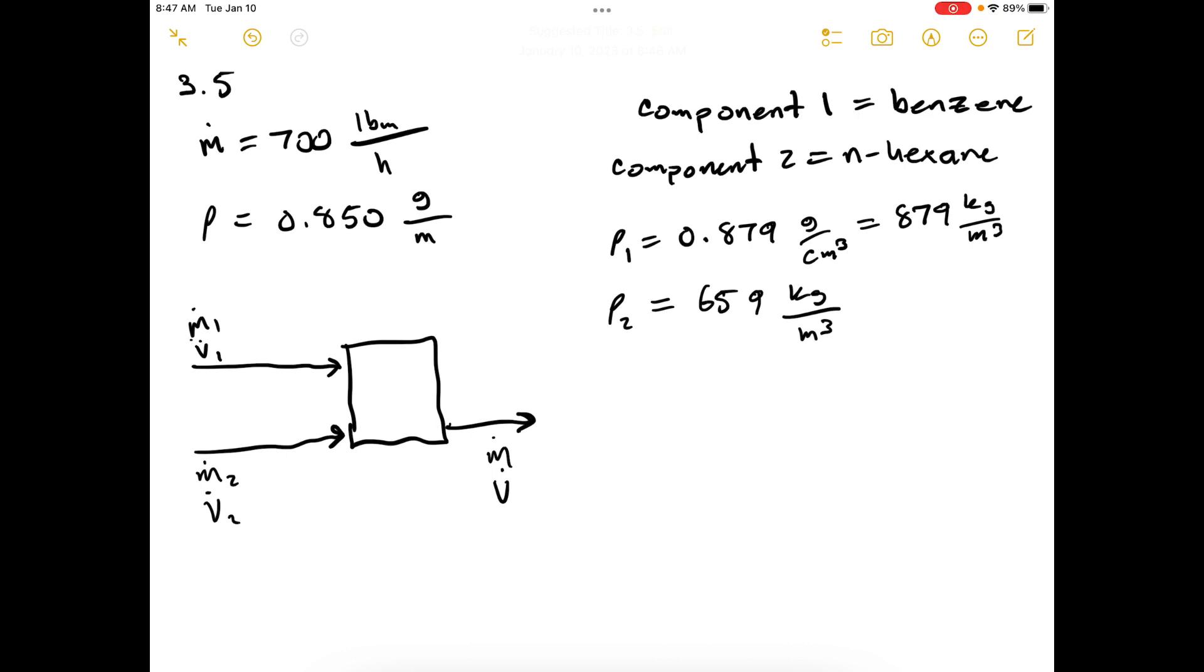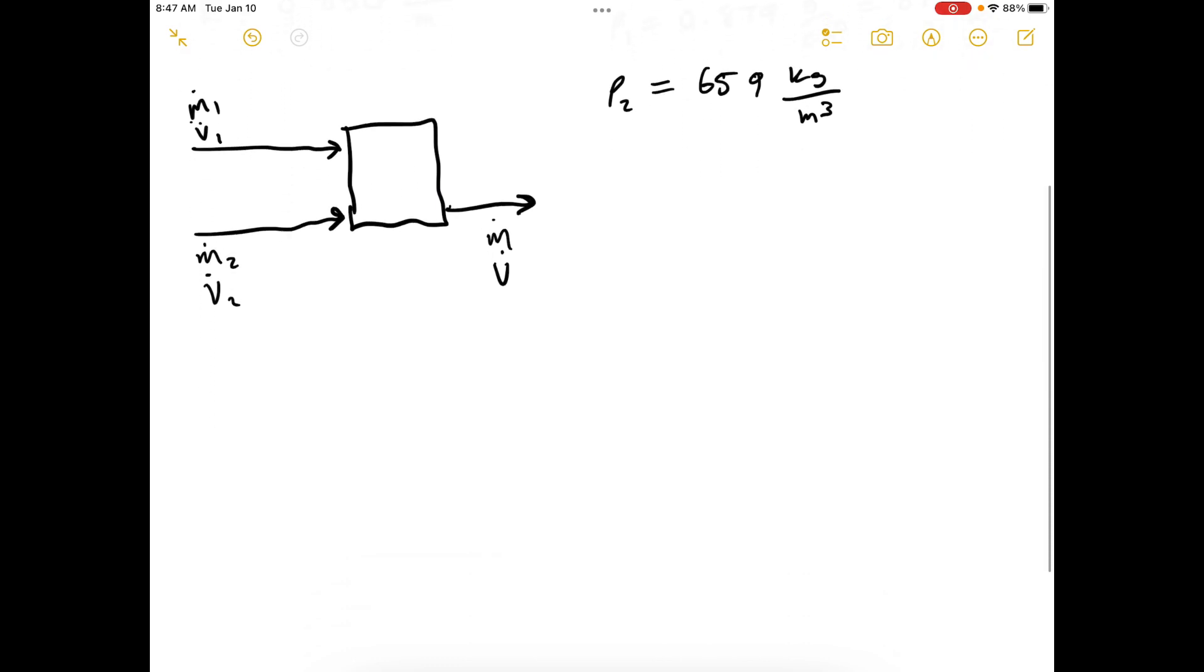Let's assume that because benzene and hexane are very similar in chemical structure, when we mix them together the volume is conserved. So v1 plus v2 equals v3. The other assumption is that the two streams going into the mixer are perfectly mixed before they leave.